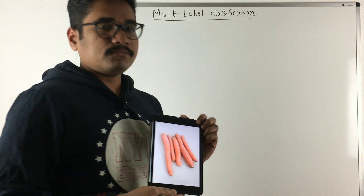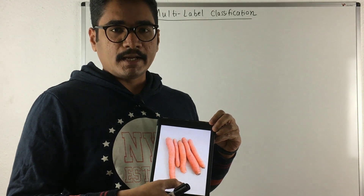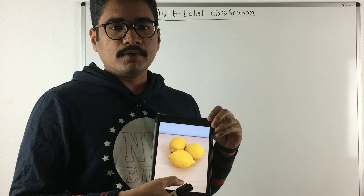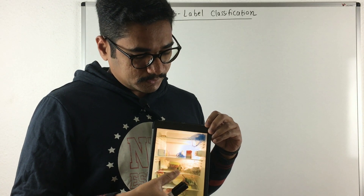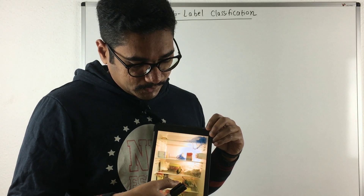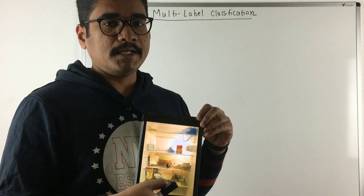Say I have these items — carrots, lemons, broccoli — all belonging to different classes. Now when I put all of them into my refrigerator, along with milk and other items, a particular image can belong to multiple labels. So for a particular image it can belong to more than one label and have more than one class. This is the basic idea or notion of multi-label classification.